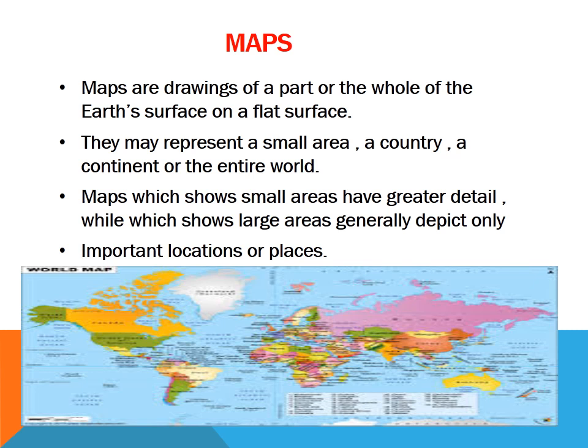A map can show continents, countries, cities and even a local area with all the details. It is easy to handle and carry as it can be rolled up or folded. However, maps also have a disadvantage: a flat map cannot accurately show the curved surface of the earth. When a map is drawn, the shapes and sizes of the continents and oceans get distorted. The maximum distortion occurs in regions around the poles, while the equatorial region can be shown with reasonably less distortion. Children, the science of map making is called cartography, and a person who draws maps is called a cartographer.